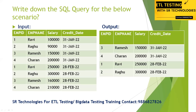Now if you want to do this, the output for January shows Ramesh and Charan, and for February we expect Ravi and Ragu. We have to write a query to produce this output.